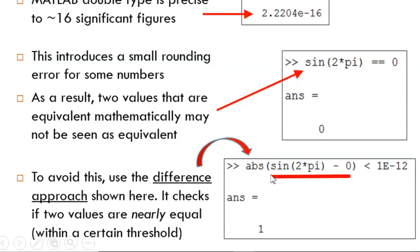First, we compute the difference between the two values of interest. Then, we take the absolute value to ensure the difference is positive. Then, we check if the difference is less than some small threshold value. If the difference is very small, then the numbers are close enough, and the result is true.